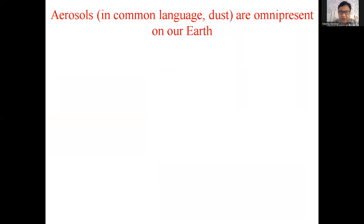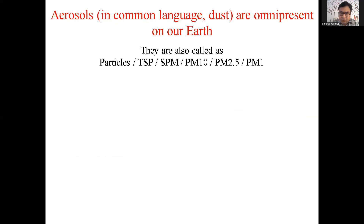So what are aerosols? In common language people call it dust, or in Hindi we call it 'dhol,' which is omnipresent on our earth — wherever you go, you will find aerosols. We also call them particles, or total suspended particulate, or suspended particulate matter — SPM. Sometimes PM10 or PM2.5, which you would have heard multiple times, often used in news. PM10 means particulate matter smaller than 10 microns in size. PM2.5 means particulate matter smaller than 2.5 microns in size — size meaning diameter. Similarly PM1 means less than 1 micron.